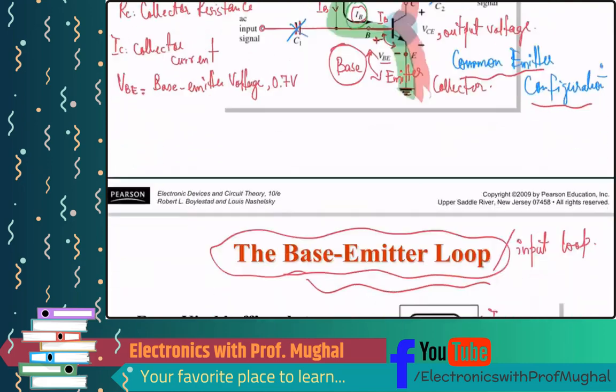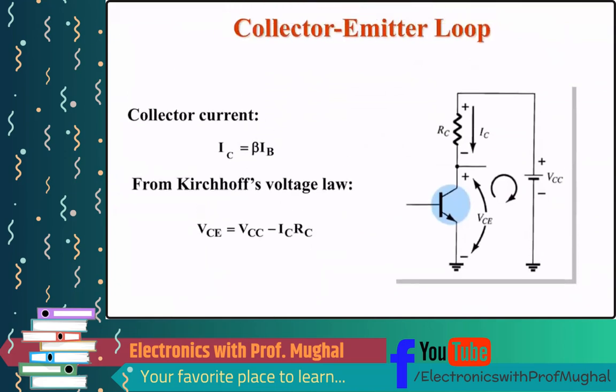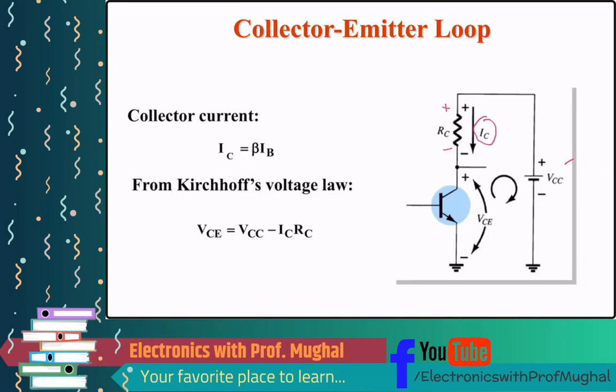The collector emitter loop here is the red. And I can redraw this circuit such that I only have the output, not the input side. So notice here, you got VCC here, you got the RC here, plus minus here, the current going through it is IC. Then you have VCE at the output side, which is the voltage across the collector in the emitter terminal. So we refer to VCE. And then we can just apply Ohm's law. So we get VCC, VCC minus IC times RC minus VCE equals to zero.